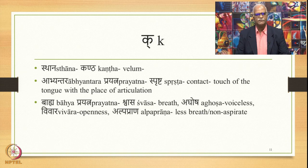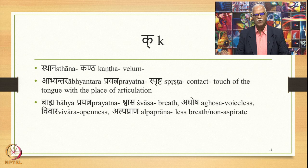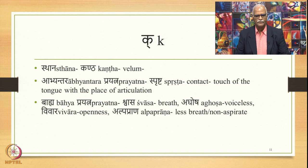First, let us take the ka class, which appears first among the consonants. The sthana or place of articulation of ka is kantha or vilam. The abhyantara prayatna of ka is sprashta — that is, contact or touch of the tongue with the place of articulation. The bahya prayatna of ka is shvasa (breath), aghosha (voiceless), vivara (openness), and also alpaprana — less amount of breath. This is called non-aspirate. This is how ka gets described.